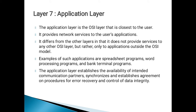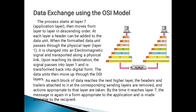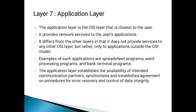Layer 7 — the application layer. The application layer is the OSI layer closest to the user. It provides network services to the user's applications. It differs from the other layers in that it does not provide services to any other OSI layer, but rather only to applications outside the OSI model. Examples of such applications are spreadsheet programs, word processing programs, and bank terminal programs.